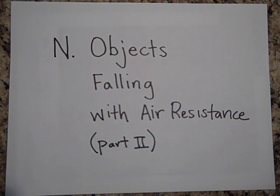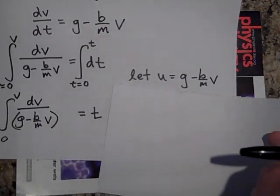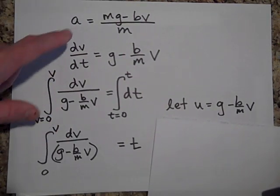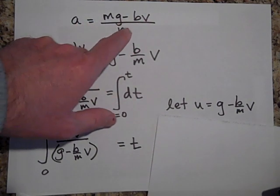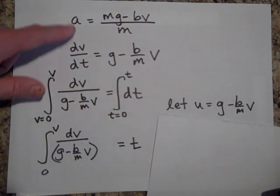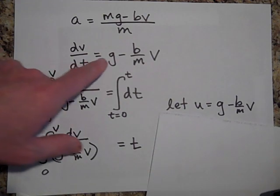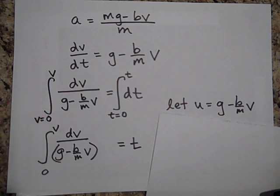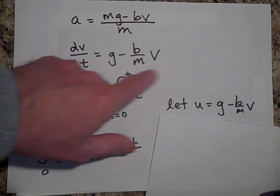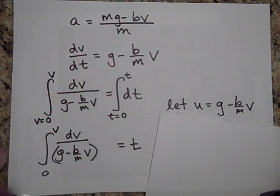Okay, back to objects falling with air resistance, part two. Where we were was starting with Newton's second law: a equals F-net over M. I changed the a to dv/dt and rearranged this a bit, dividing both terms by M, then separated my terms so I got my v term with my dv.